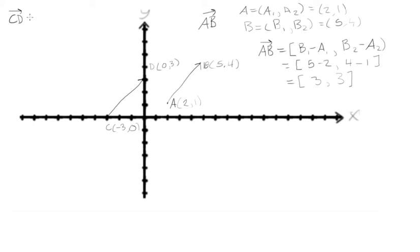Now let's see what vector CD equals. Zero minus negative three equals 3, and three minus zero equals 3. This is the same [3, 3] as before, so we can say vector CD equals vector AB.